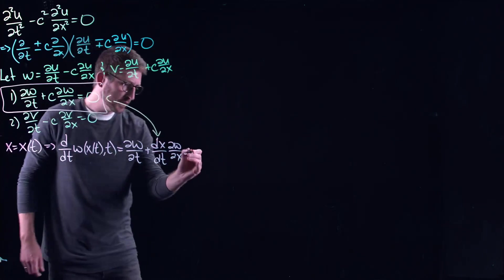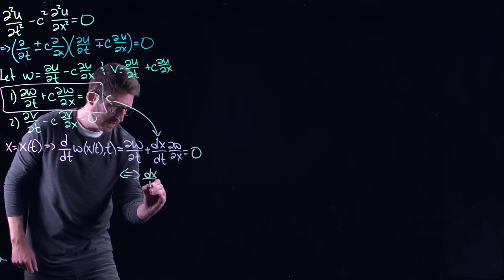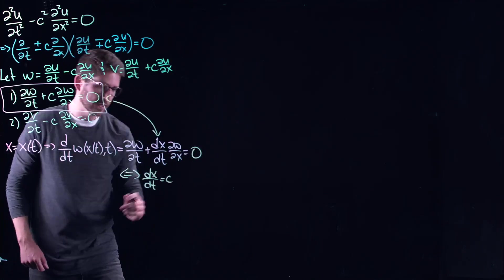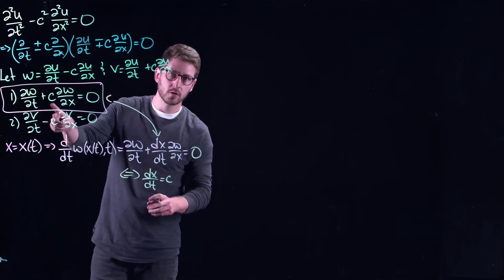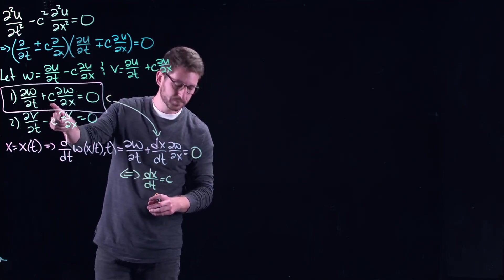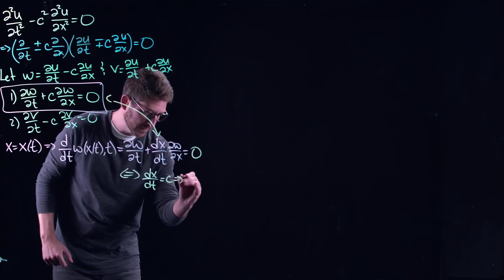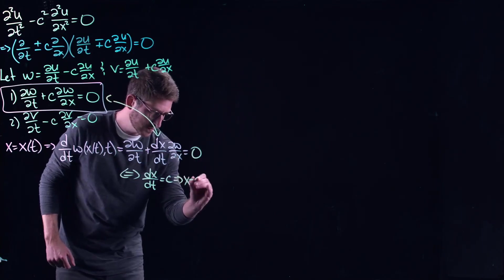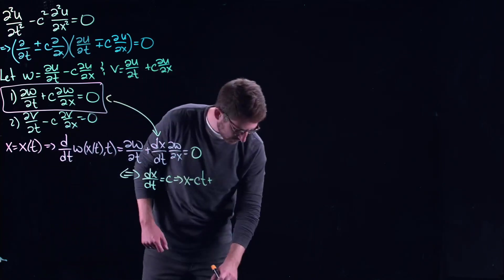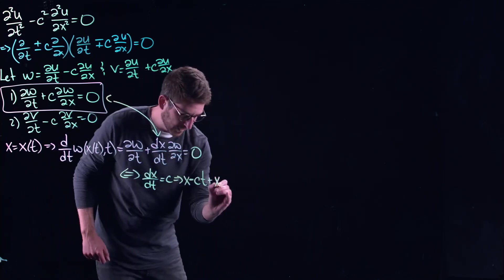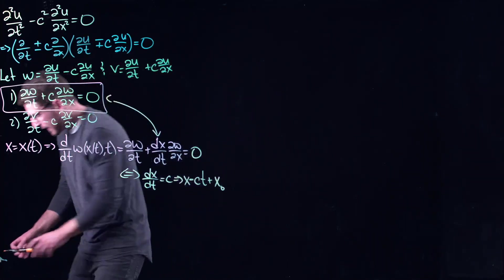And what I can see here is that this thing could be equal to zero if and only if dx/dt equals c, because that would just give me the original equation that I started with. So essentially here, this would give me that x equals c times t plus some initial offset, we can call it x naught.